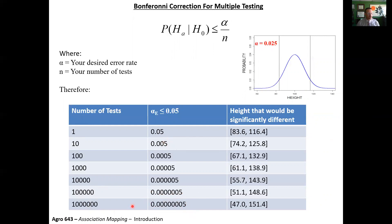With a million markers, you need a lot more individuals and statistical power to reach significance. Using the plant height example from the last lecture: if you're doing only one test, you need height less than 83 or more than 116.4 to declare significance. However, if you get up to a million markers, you need height less than 47 or greater than 151. So if we have a hypothesis and can narrow down the number of markers to test, we don't need as large sample sizes.